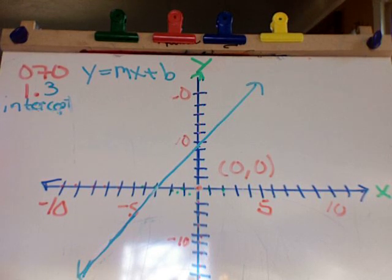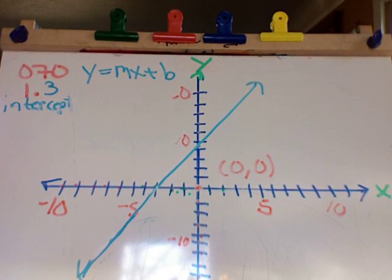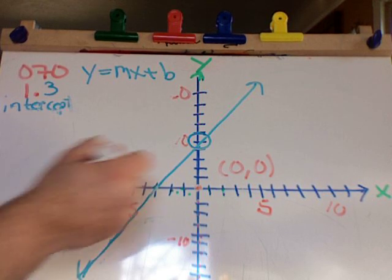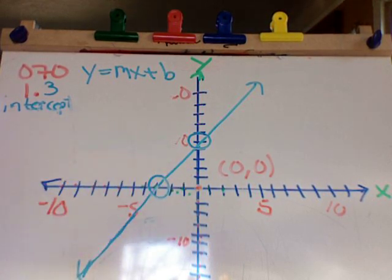When we have a straight line, there's two interesting points. One is where that line intersects the y-axis, and where that line intersects the x-axis.